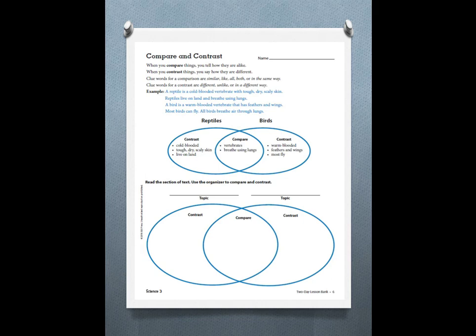Then you are also going to contrast. How are these things different? Those go in the part of the oval that is not overlapping with the other oval.